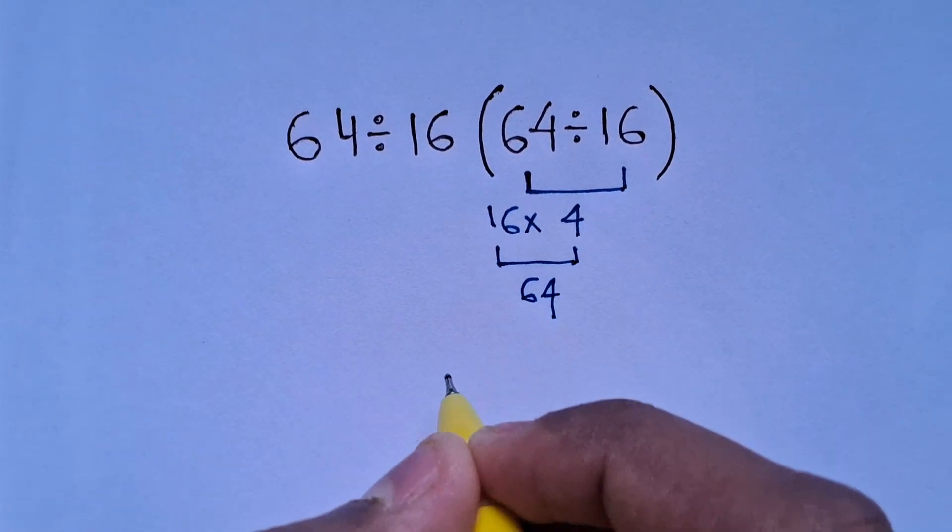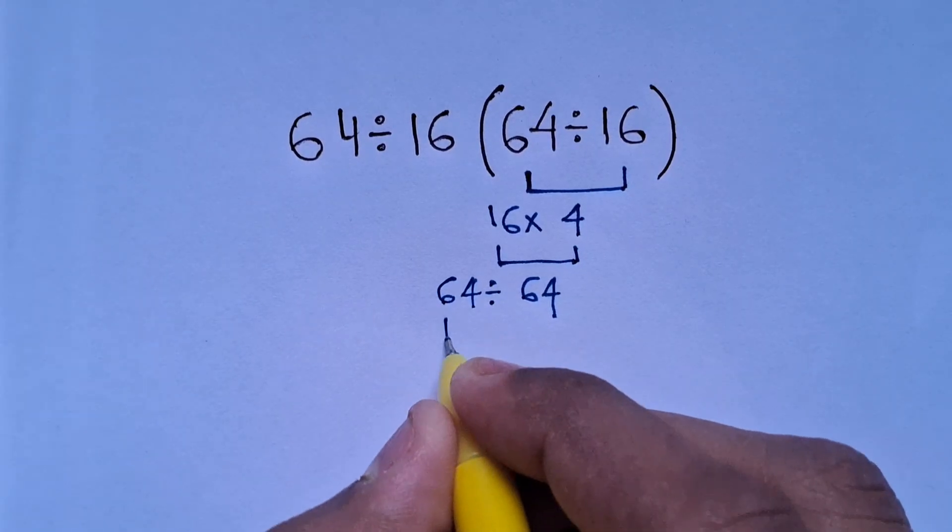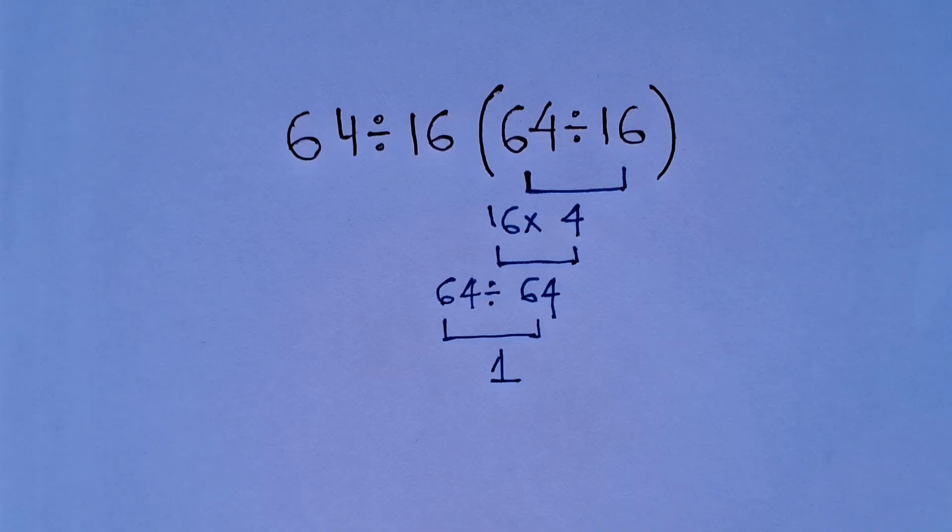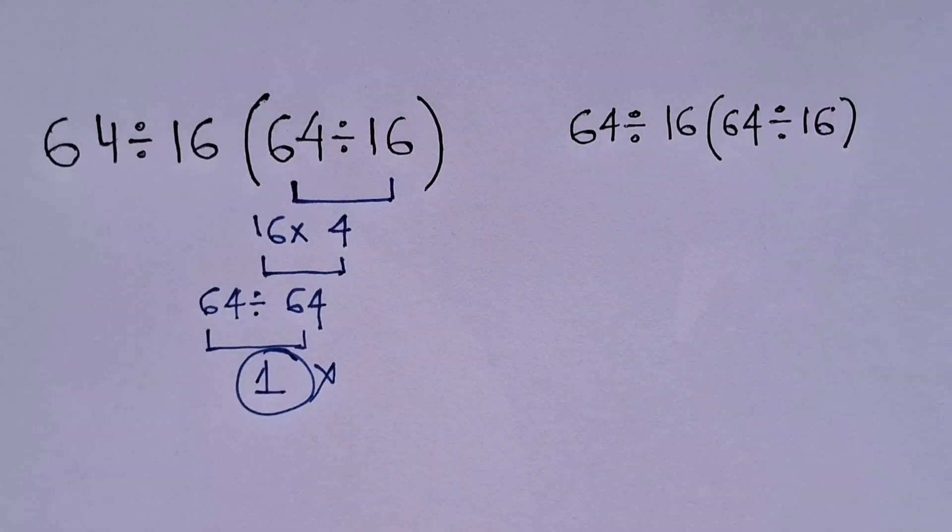Now finally the expression becomes 64 divided by 64, which equals 1. But 1 is not the correct answer for the expression. Let's try to find the wrong steps that we have done here in the expression.